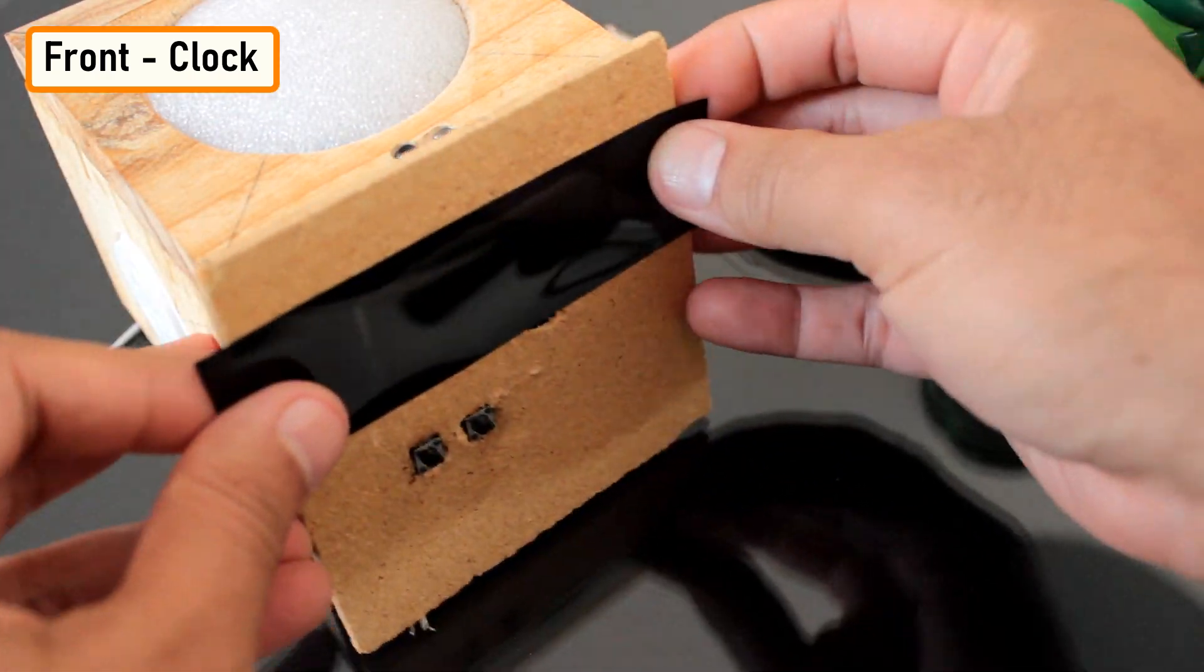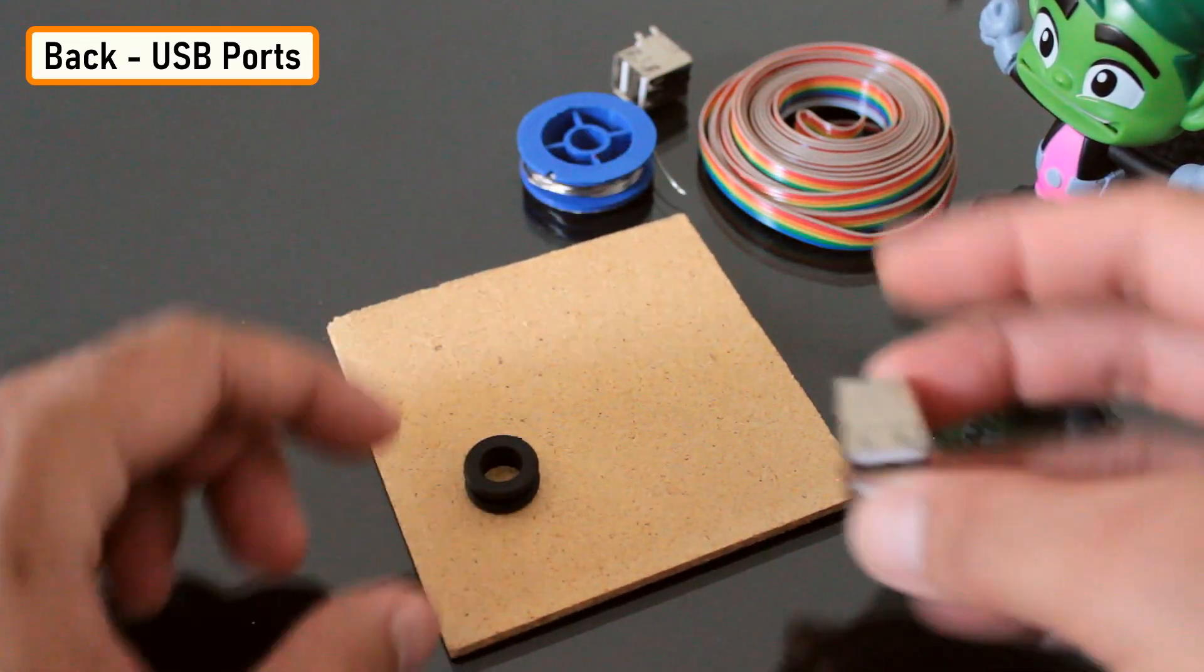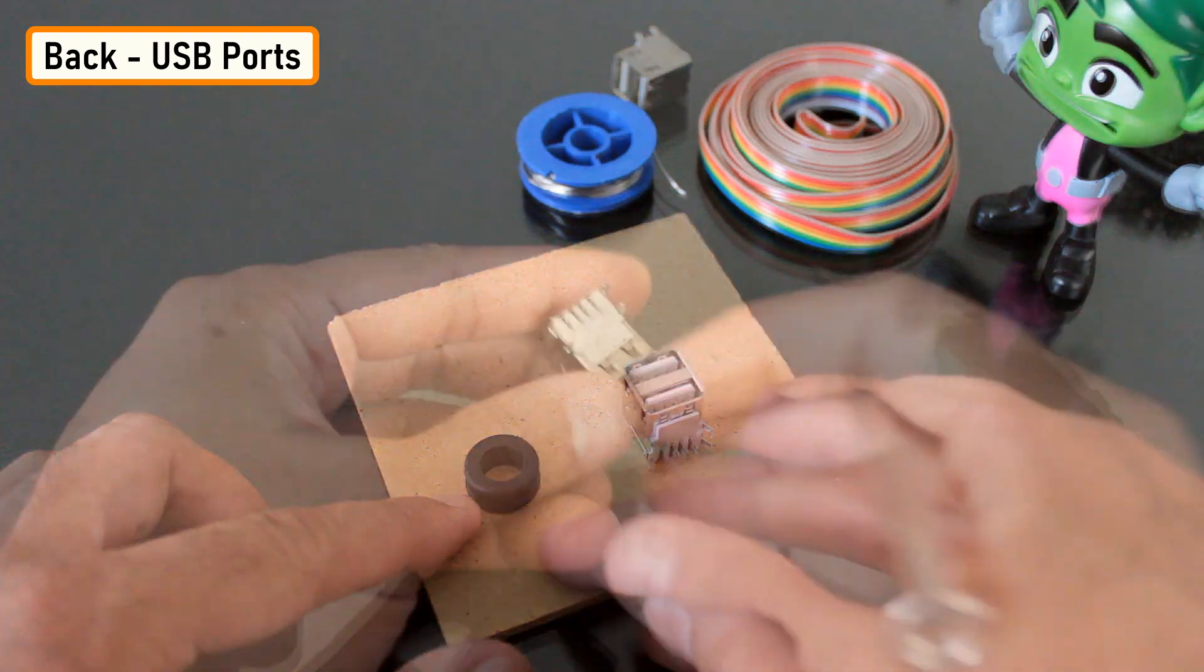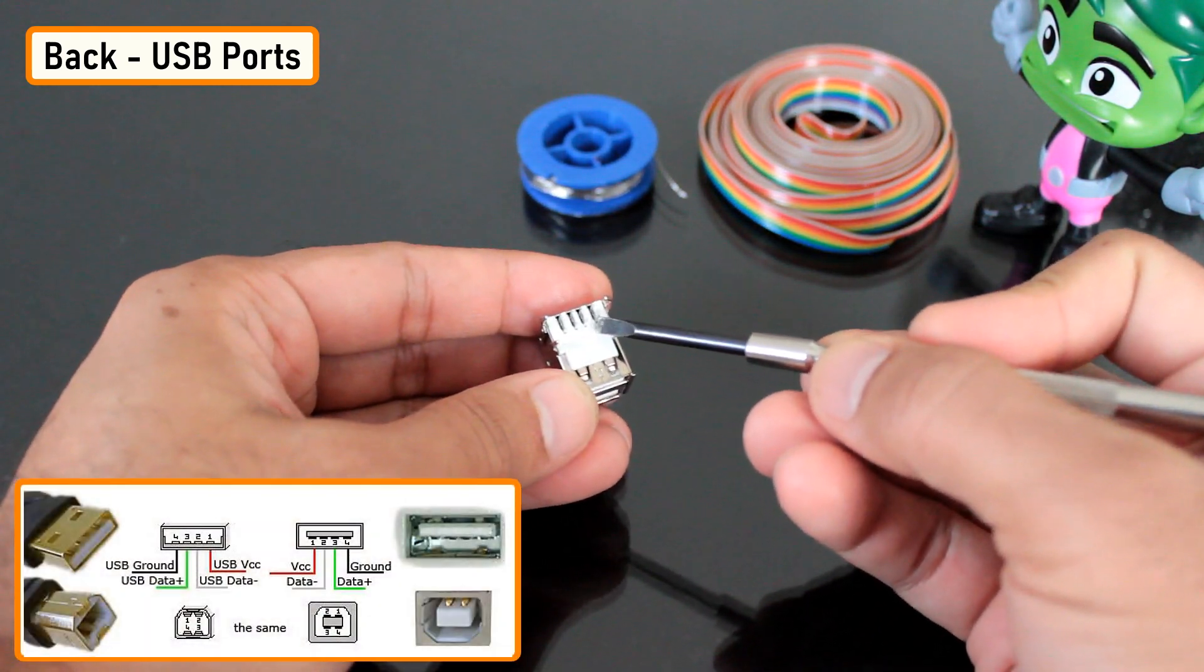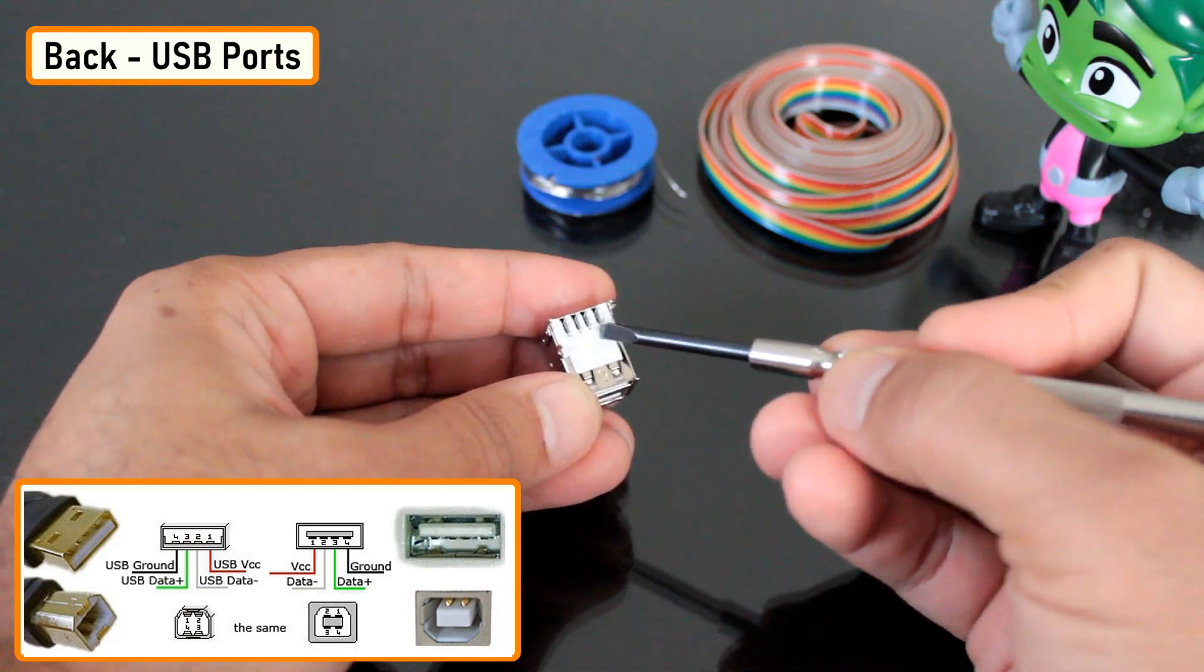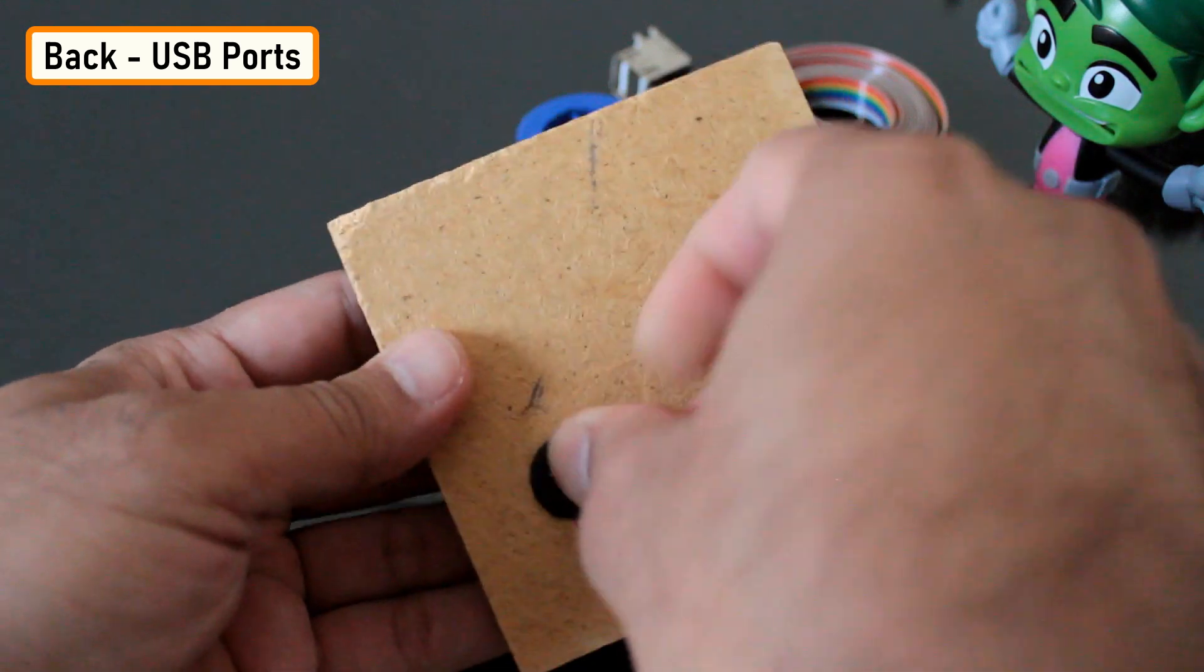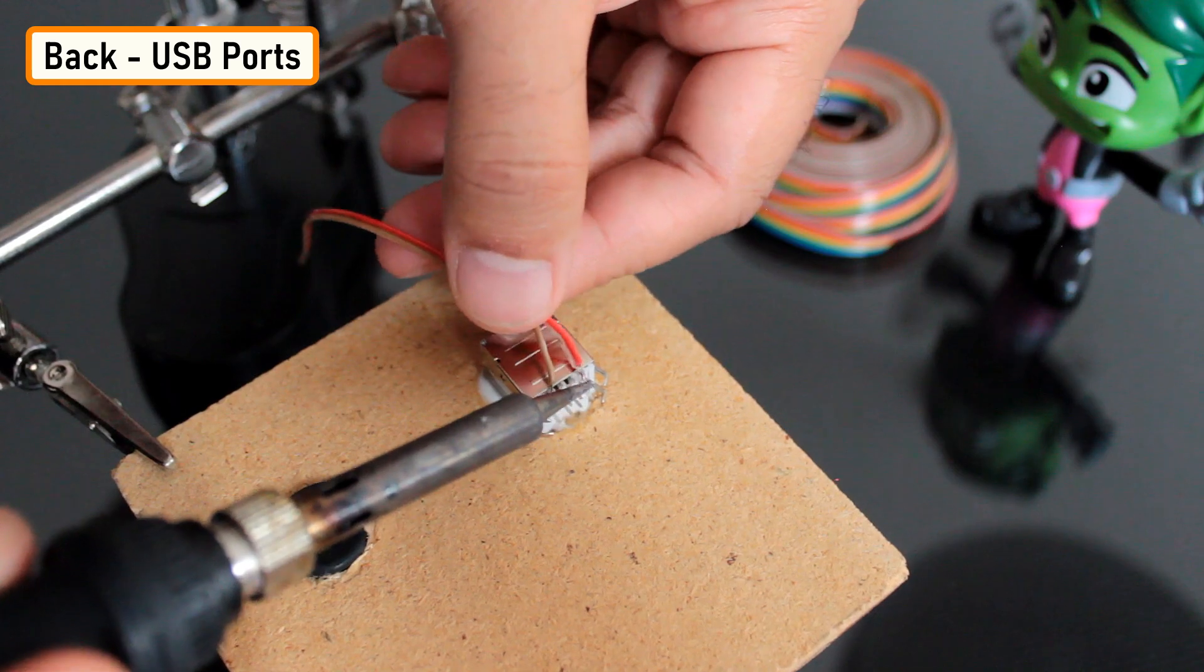The back bit will host the USB port and will also have a hole for the AC power cord. Let's have a look at this USB port. When I'm holding a USB port upside down, the leftmost pin is the negative pin and the rightmost pin is the positive pin. The middle two are the data pins which I'm not going to use in this project. I used a rubber grommet to safeguard the power cord's hole.